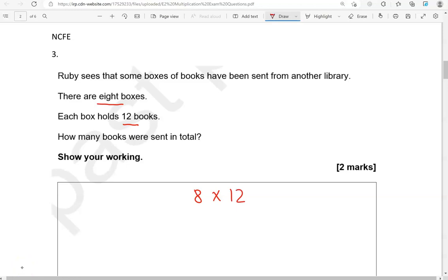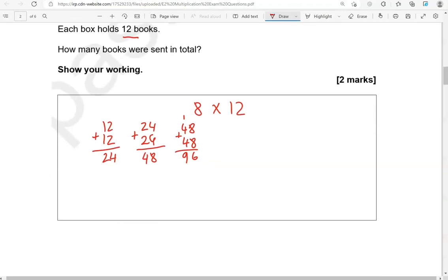Again, we can go 12 and 12. That is 24. So we've got 2 lots of 12. 24 and 24 will give us 4 lots of 12, and that is 48. So 48 and 48 will give us 8 lots of 12, or 8 times 12. So 8 and 8, that is 16. 16, 1 carried over. 4 and 4 is 8, and the 1 is 9. So the answer is 96. Should actually do it like this.